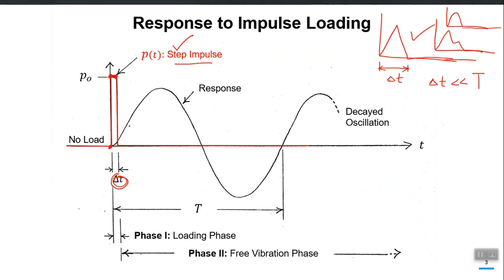Our target is to calculate the response u(t) against this kind of p(t). For simplification in calculations, we divide the response into two phases. Phase one is called the loading phase — it is a very small phase in which there is actually some loading. After this phase, after time delta-t, loading becomes zero, which means the structure will be vibrating freely. The structure will then oscillate with free vibration.